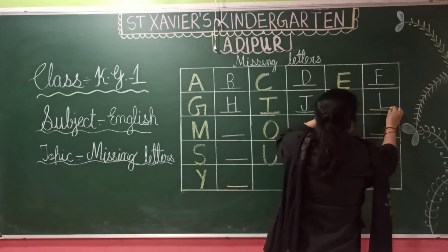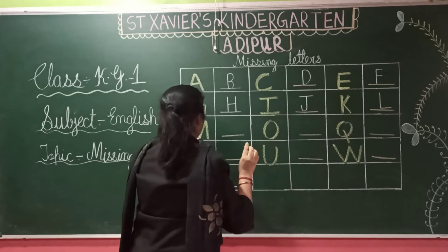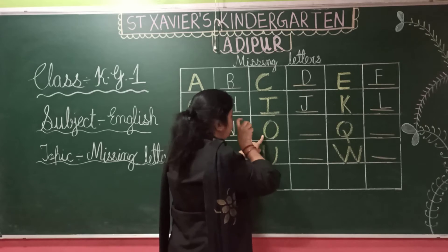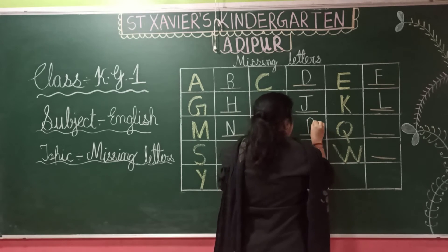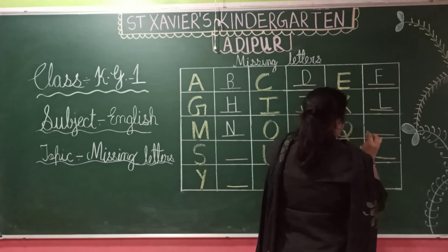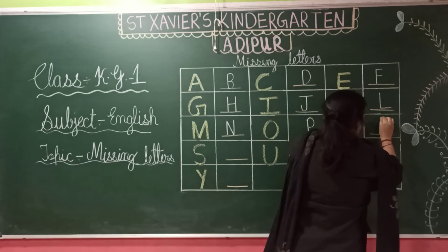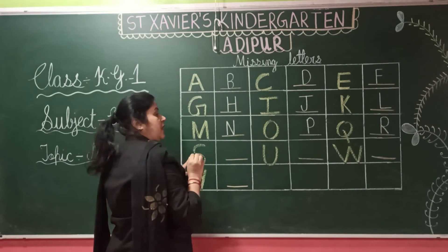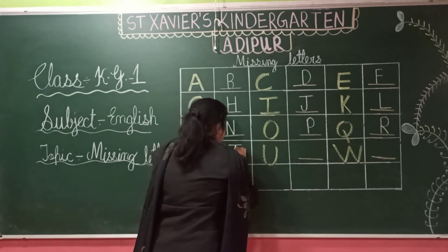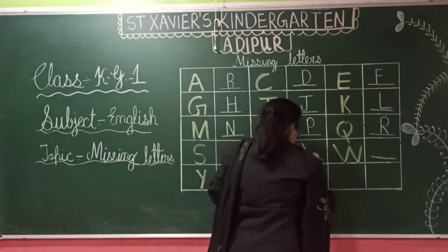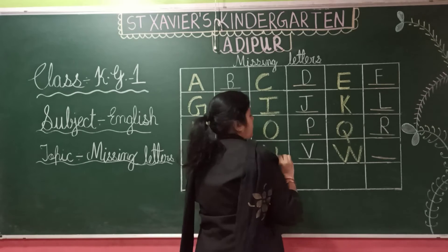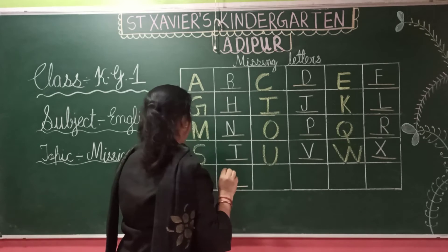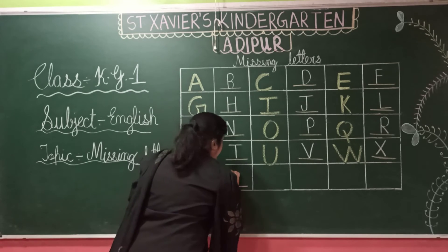K ke baad kya likhna hai? L. Then M likha wa, N ke baad? M. O likha wa hai, P. P ke baad? Q. Q ke baad? R. Okay kids? Now, what comes after R? S. S ke baad kya aata hai? T. U. V. W. X. X ke baad? Y ke baad kya aata hai? Z.